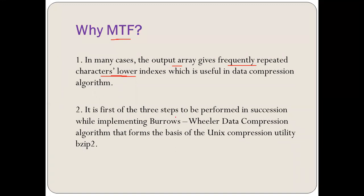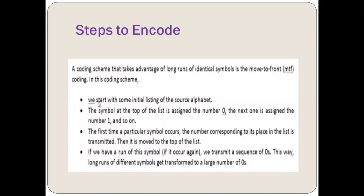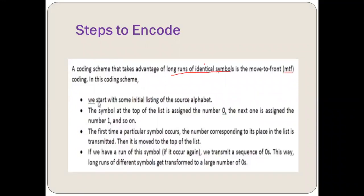MTF is the first of three steps to be performed in succession while implementing the Burrows-Wheeler data compression algorithm. We have already seen the Burrows-Wheeler data compression algorithm in the earlier lecture, and this is the first step in the BWT transformation. It is a coding scheme that takes advantage of long runs of identical symbols — a sequence in which you have a number of identical symbols recurring again and again.